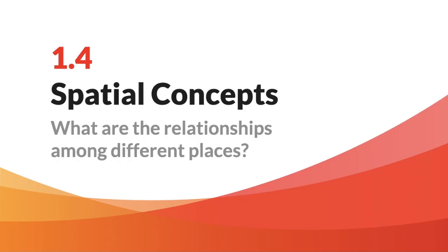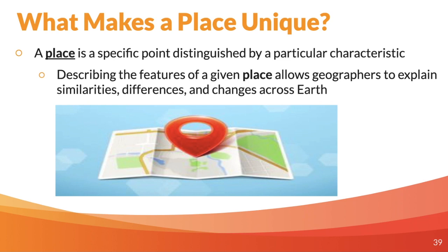So section 1.4 — what makes a place unique? The term 'place' actually has a distinct definition in human geography. It's a specific point distinguished by a particular characteristic, so it has to be set apart in some way. It's a very specific point on a map distinguished by a particular characteristic.